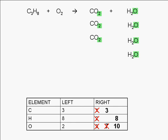At this point, carbon is balanced. We have three on each side. Hydrogen is also balanced. We have eight on each side. But the oxygen is not balanced. We only have two on the left and ten on the right. This means we need to put more oxygen on the left. We do this by adding more O2s to the reactant side.